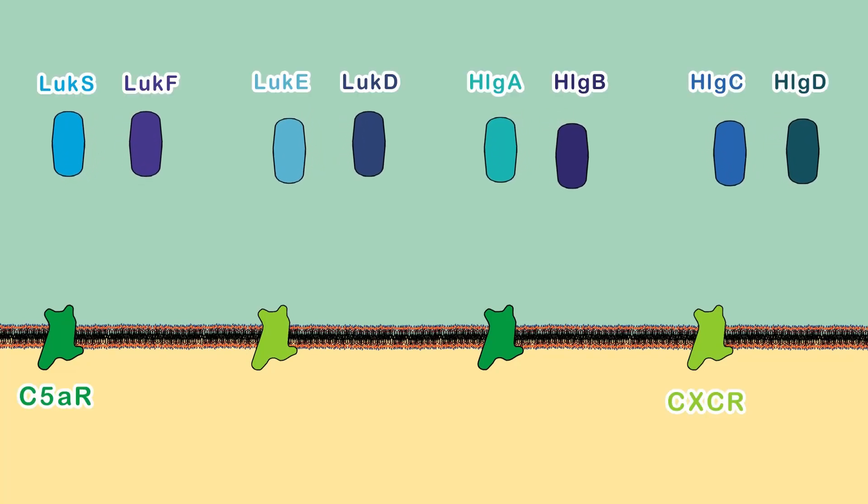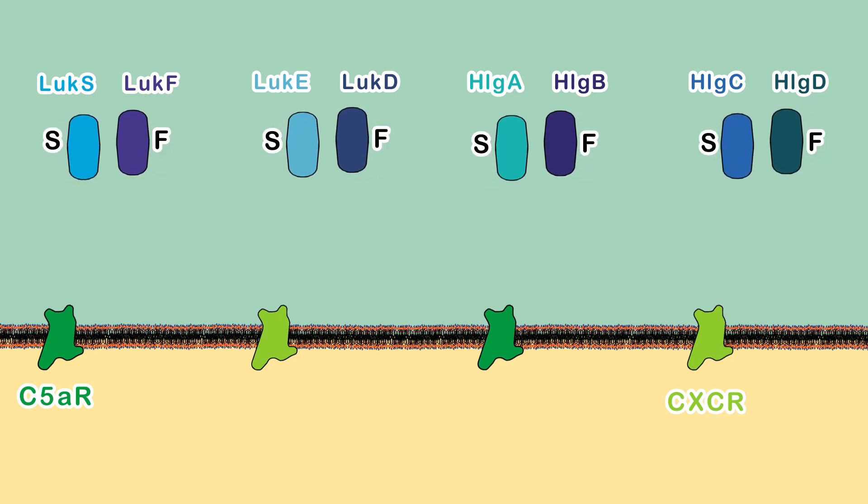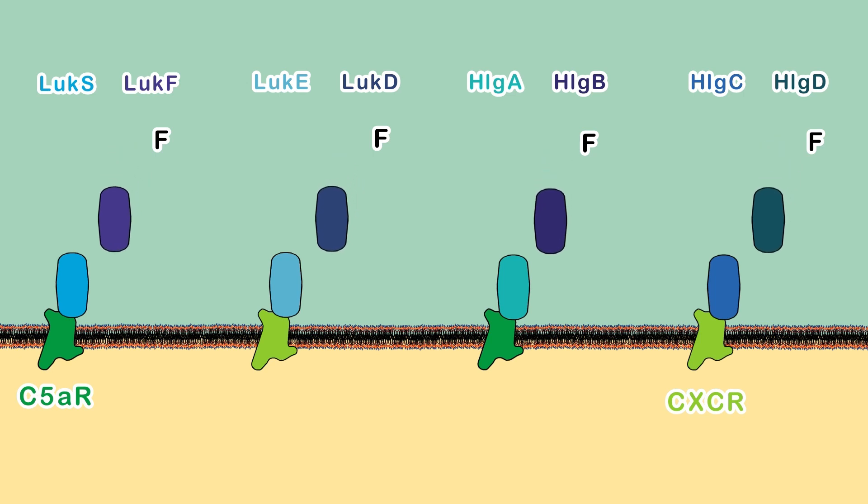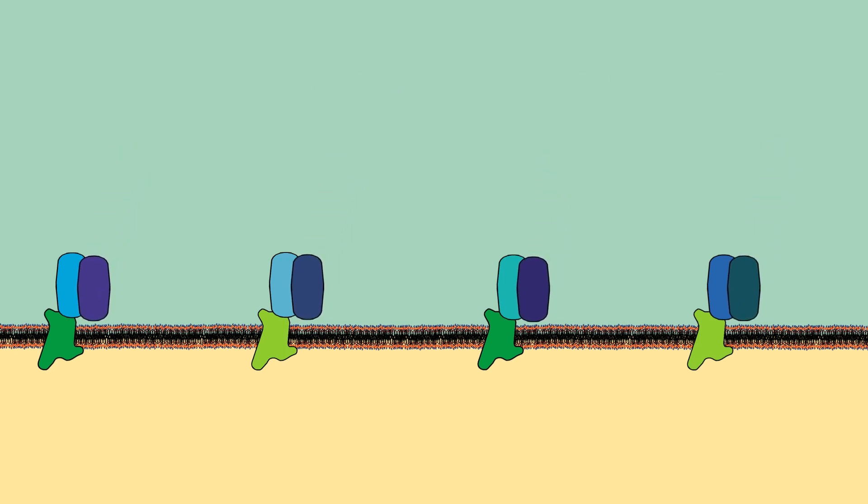Leukocidins are a group of bi-component membrane attack proteins that specifically kill leukocyte cells. First, the components classified as S bind to chemokine receptors found on phagocyte cells, then the components classified as F bind to the S components and dimerize.